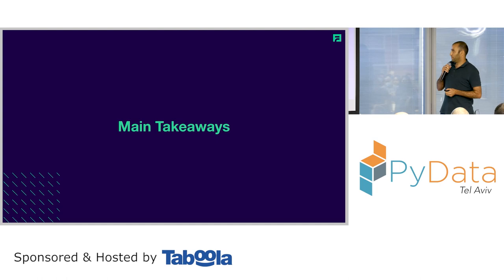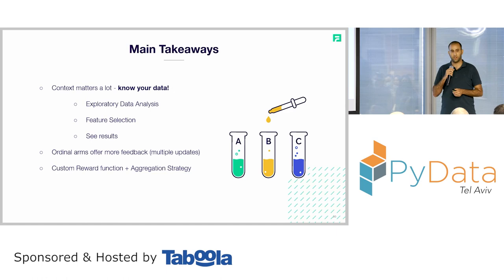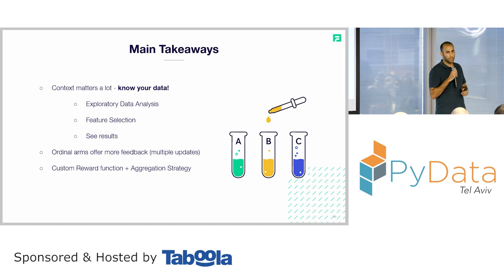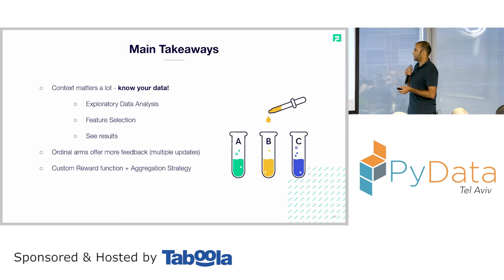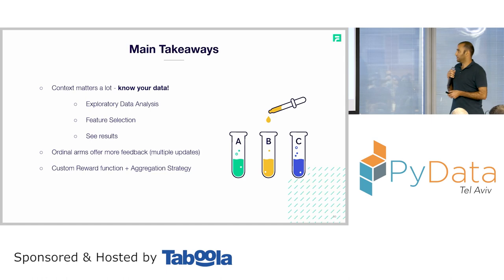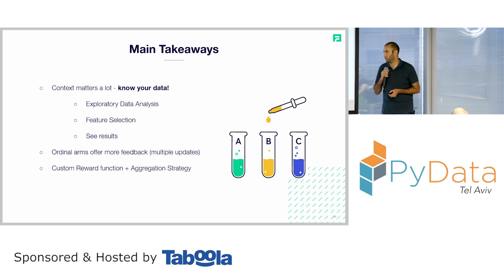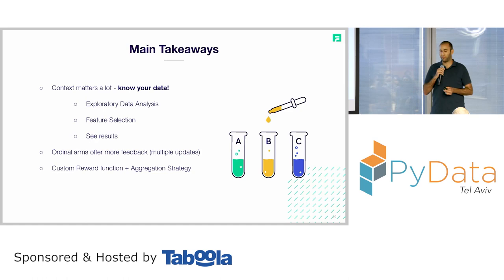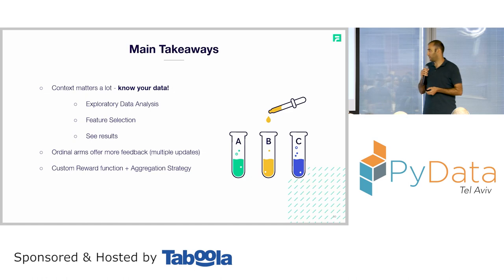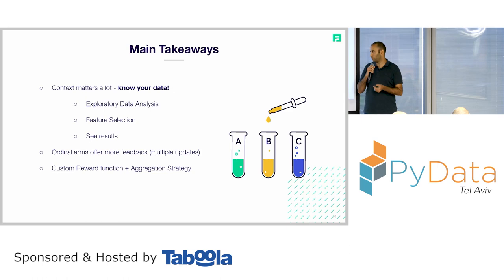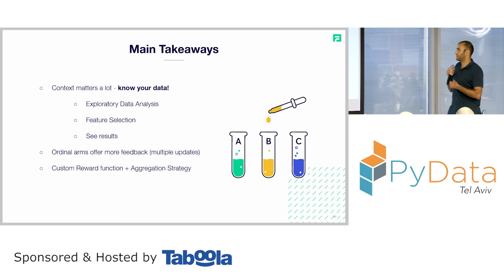Main takeaways: context matters a lot and you need to know your data. This can be achieved through exploratory data analysis to understand which context parameters matter most, and through feature selection methods. Second, ordinal arms offer more feedback — as opposed to categorical variables, we can use multiple updates via custom reward, which helped us a lot. Third is the creativity point: custom reward functions, aggregation strategies, and there is definitely more room for creativity as dynamic pricing is becoming an increasingly popular problem.